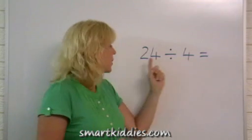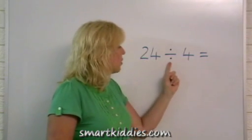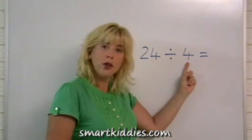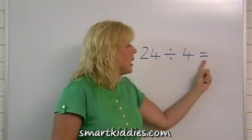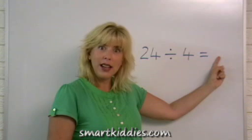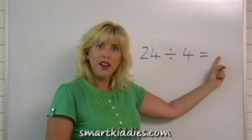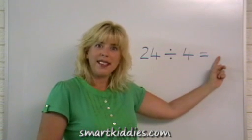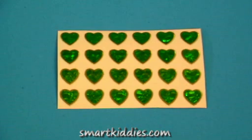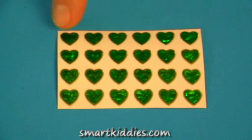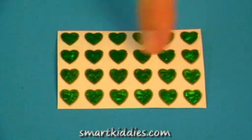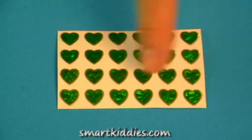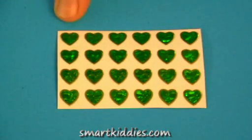Now let's see how it works: 24 divided into four groups equals how many in each group? I have 24 stickers and I've divided them into one, two, three, four rows.